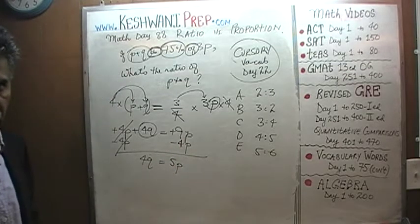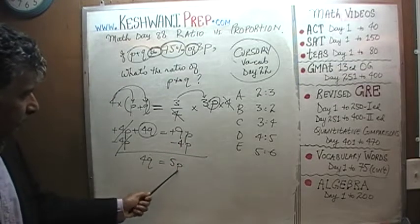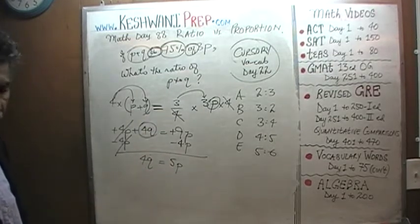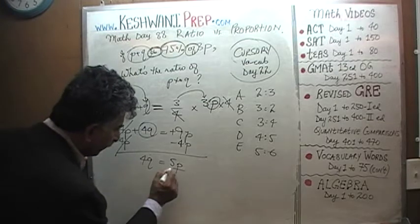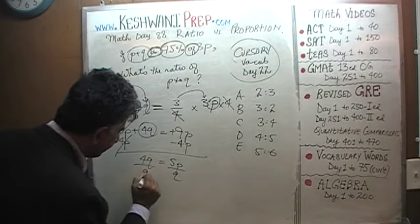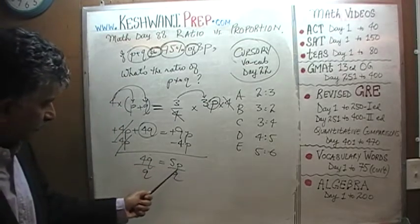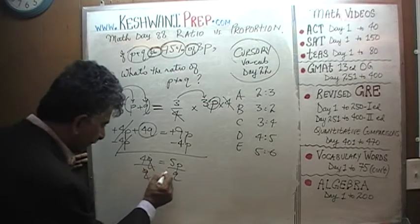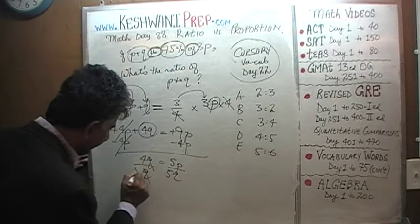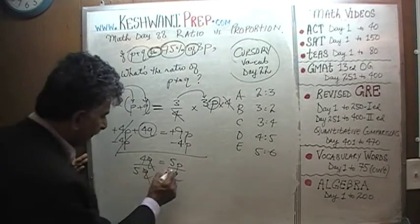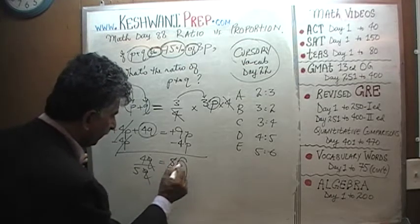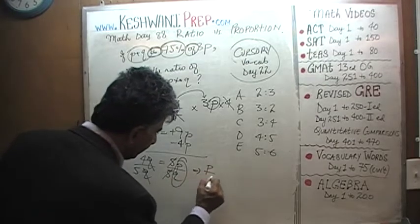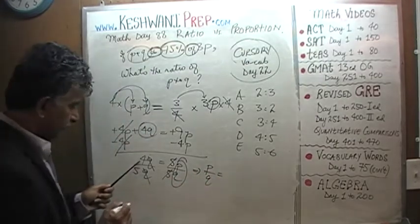Now this is where you have to slow down, we are not looking for the ratio of Q to P, they are looking for the ratio of P to Q, P to Q. In other words, we have to divide both sides by Q, divide both sides by Q so that we get the ratio of P to Q. And the Q drops out and divide both sides also by 5, so the 5 drops out. Here we are left with P to Q.